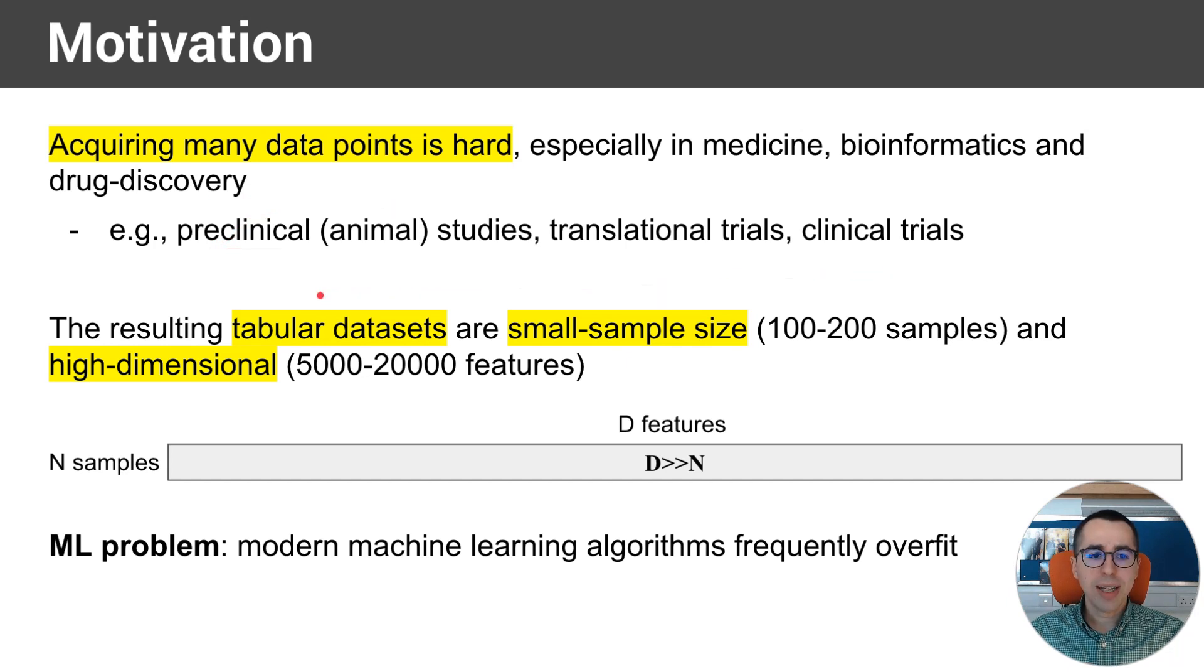Usually, the resulting datasets are tabular, which means that they are tables of data, for example, gene expressions. And those tables have some characteristics. They are usually small sample size, which means that there are very few samples in the order of 100 to 200 samples. And they are very high-dimensional, so they are 50 to 100 times more features than there are samples.